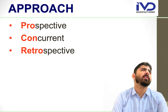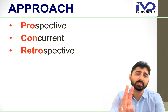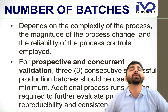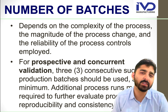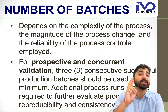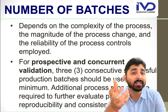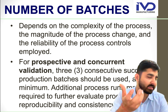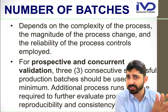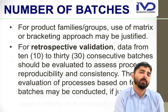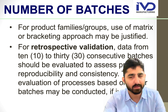The question arises about how many batches are required — three, five, or six. There is no fixed standard that says you must do three batches. It depends on the complexity of the process, the magnitude of process changes, and the reliability of the process controls at the plant. For prospective and concurrent validation, a minimum of three consecutive successful production batches are required. For retrospective validation, data from 10 to 30 consecutive batches should be evaluated to assess process reproducibility and consistency.